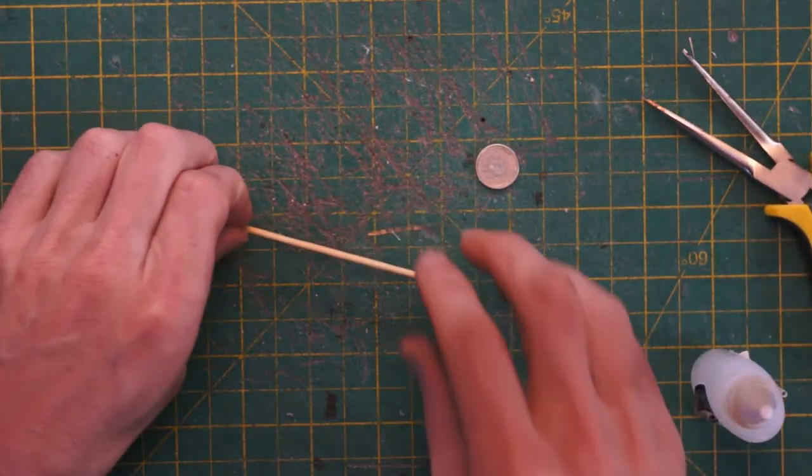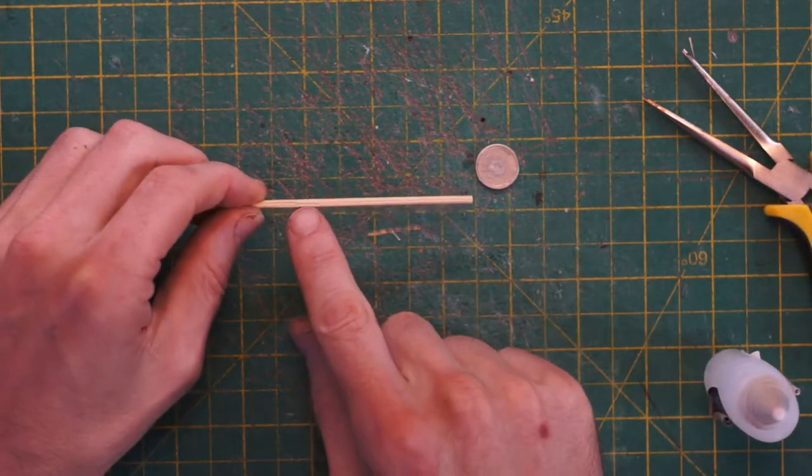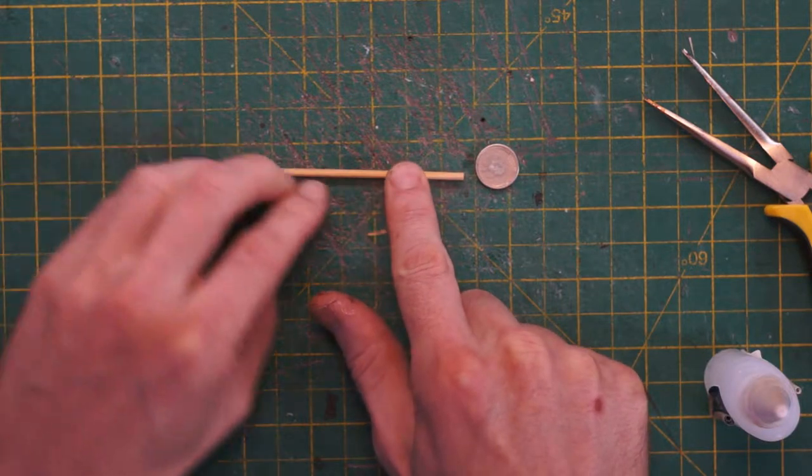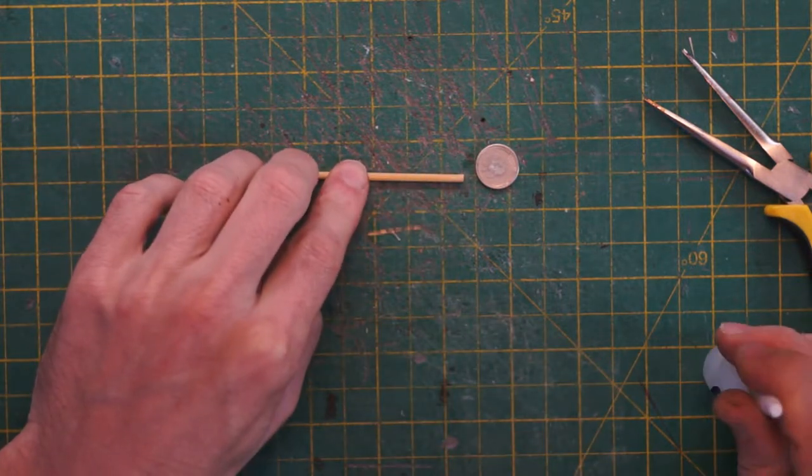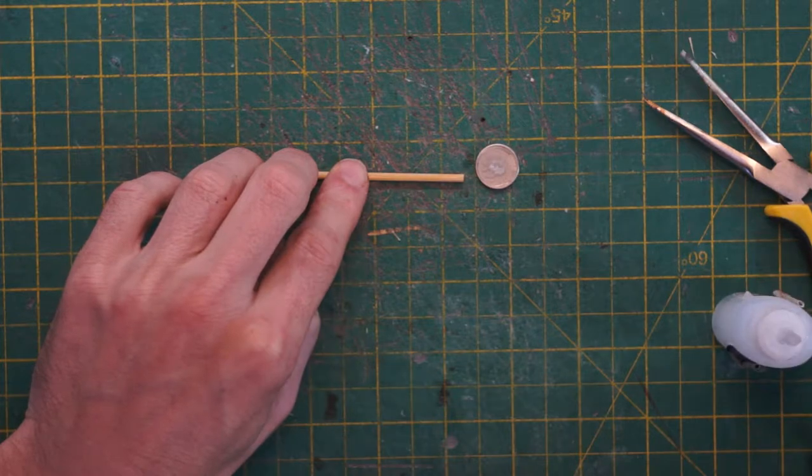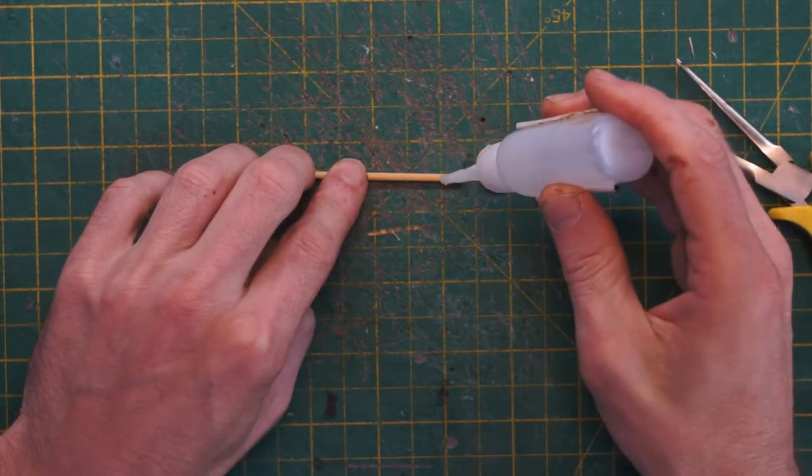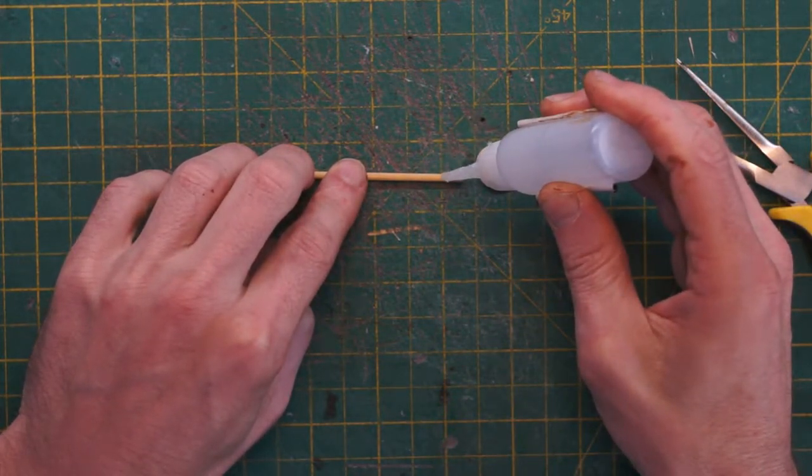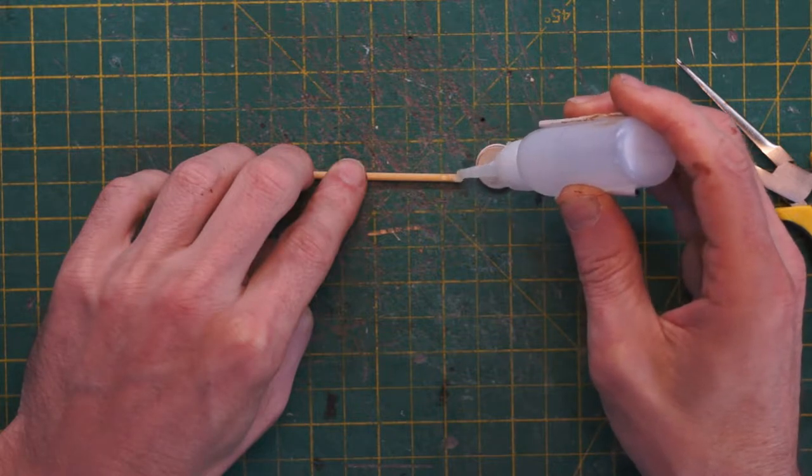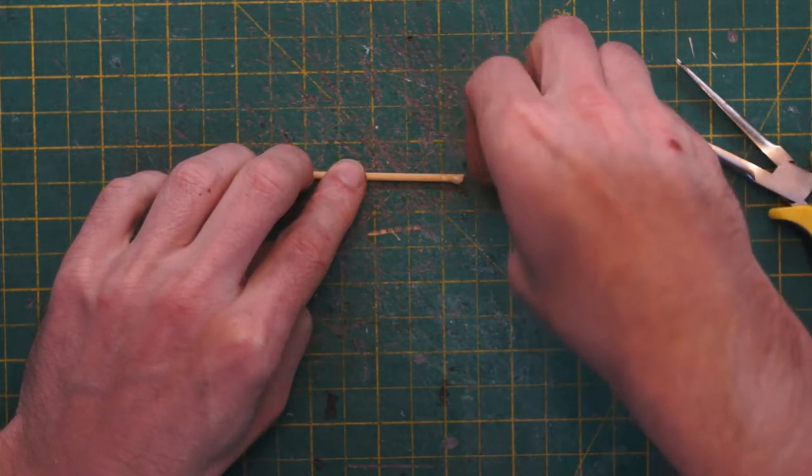Now, these skewers aren't necessarily the smoothest thing in the world. And this piece we're using for the pendulum arm is a little bit rough on one edge. We're going to make sure that's at the back so it can't be seen. So, let's glue the pendulum weight onto the skewer.